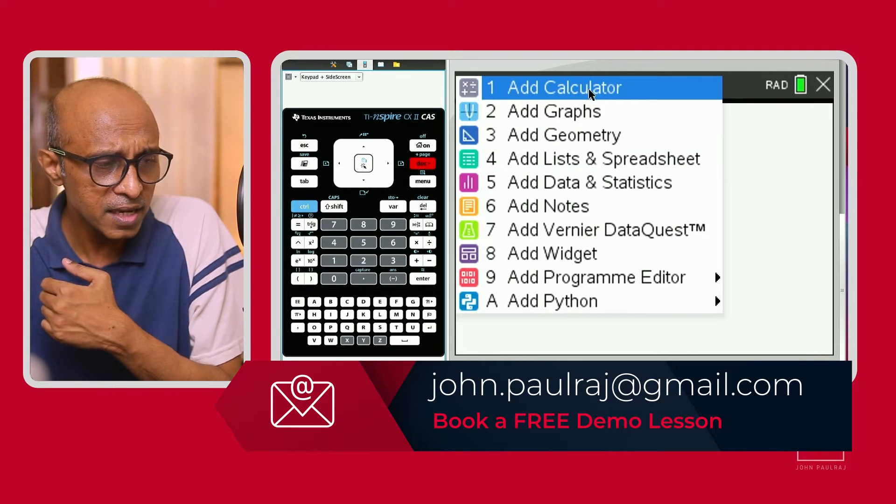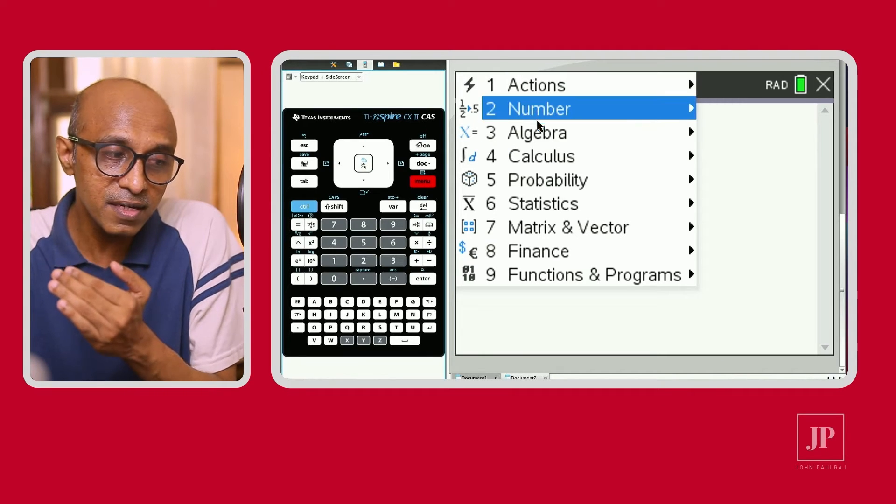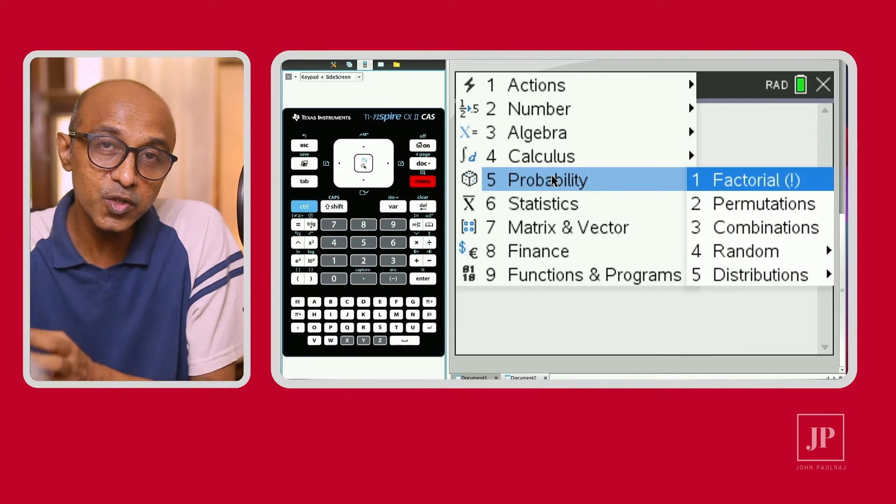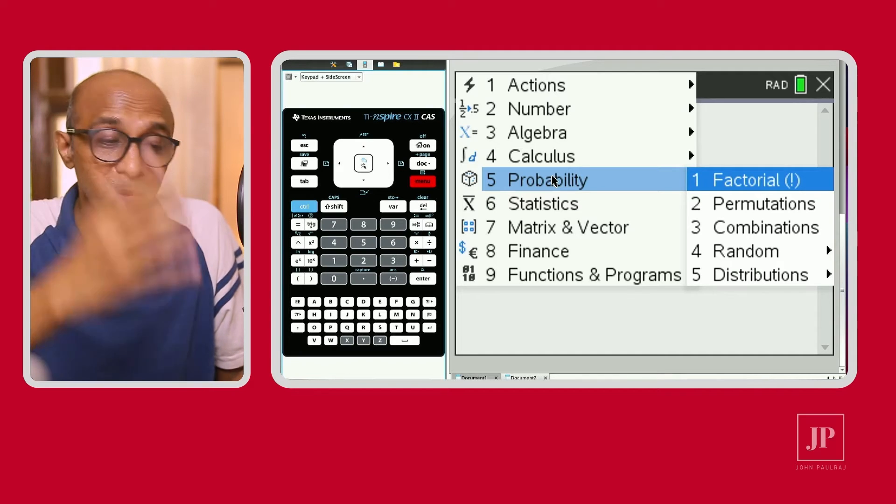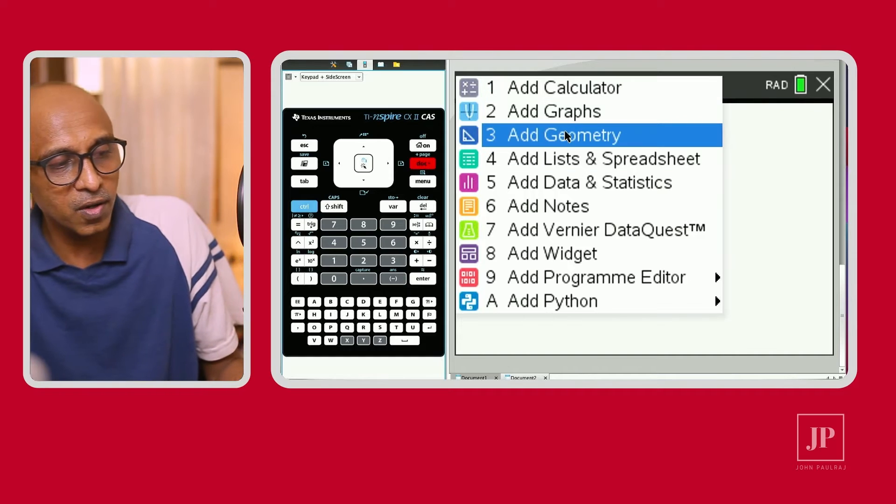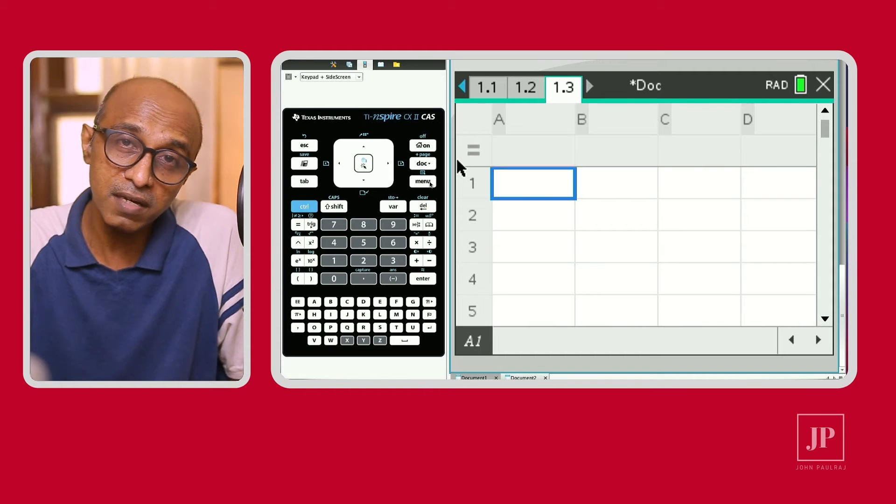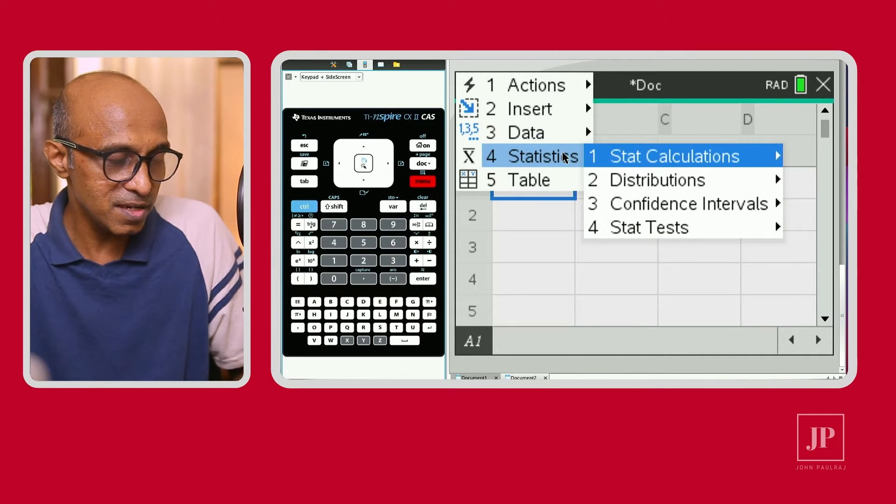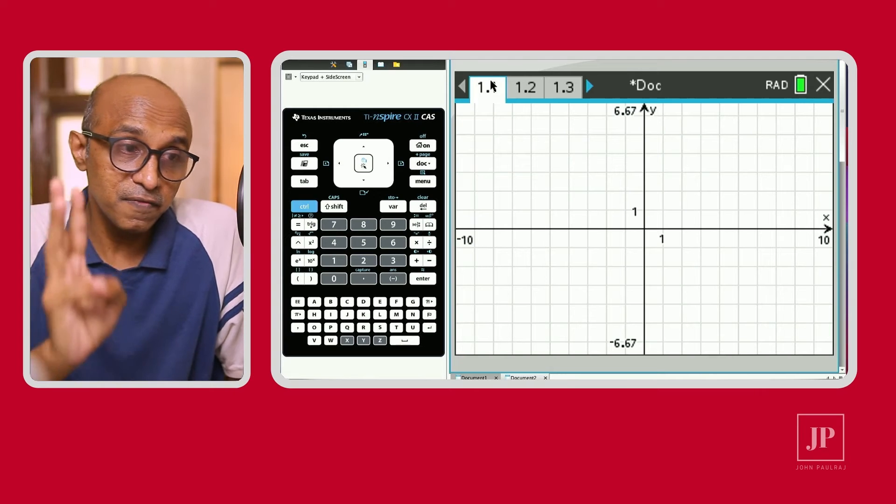So the menu key is specific to the app that is open. In this case, the app that is open is a graph page. On the other hand, say for instance, if I add a calculator page this time, now when I hit the same key, my lighthouse, the menu key, I'll see a very different list appearing. Algebra, calculus, probability. Things that pertain to the app that is open right now, the same key producing two different options. Now let's try and open another page, a list and spreadsheet page, something like the Excel spreadsheet. This time I hit the same key menu key and look at the options. Can you see that? So the menu key becomes my favorite key number three, because it is so specific to the app that is open.